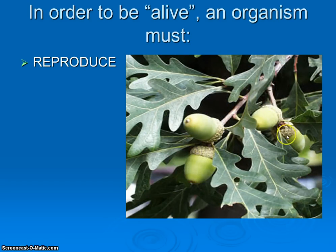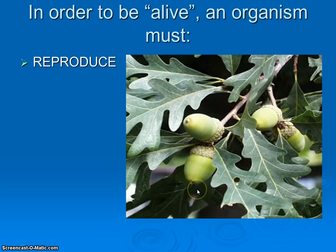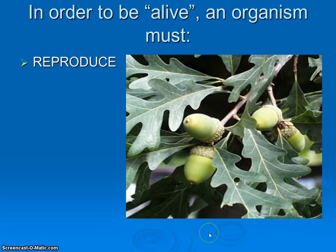You probably know what these things are — acorns. This is an oak tree. Those acorns are, in essence, the babies. They'll fall to the ground, germinate, and produce a seedling, which will in turn grow into an oak tree that has similar bark, same shape and size leaves. So all living things have to be able to reproduce.